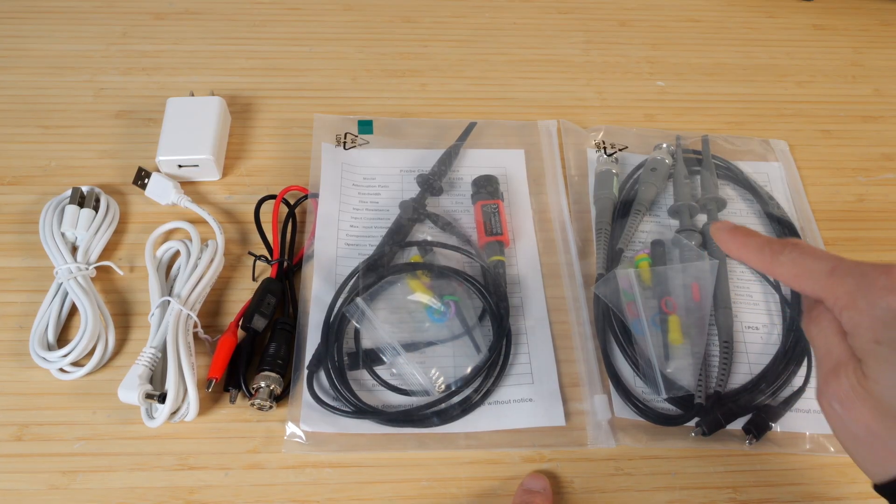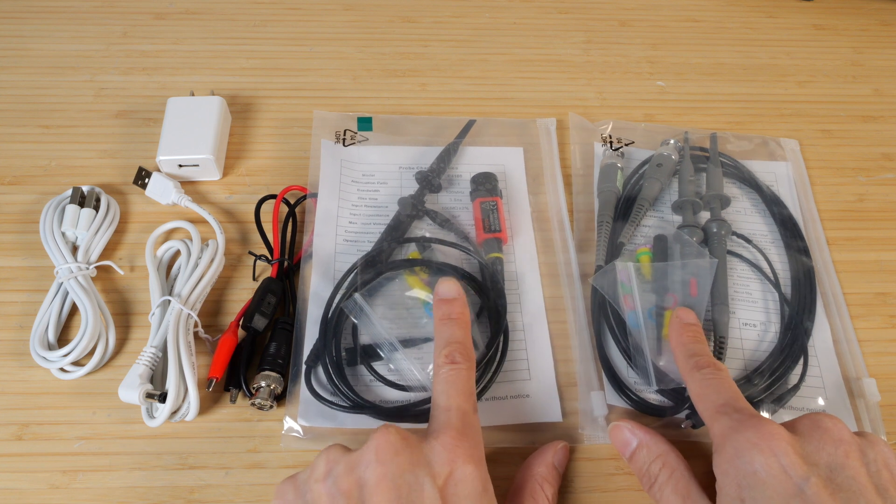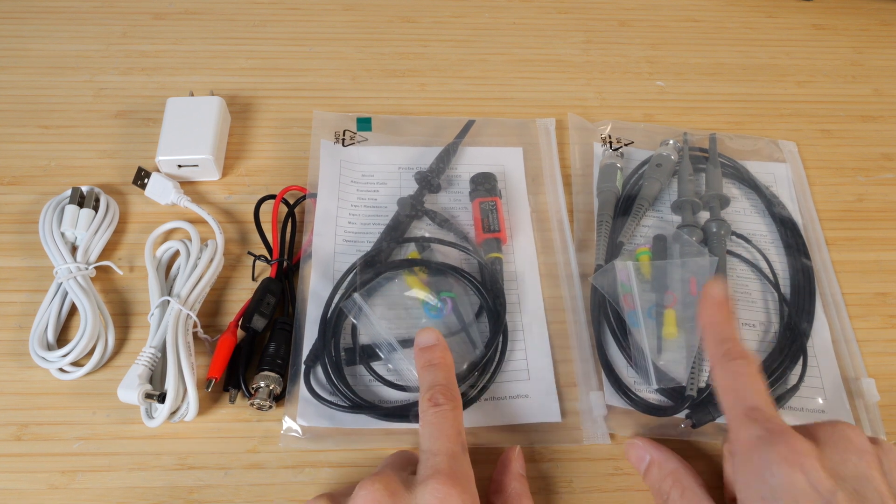Typically, oscilloscopes comes with one probe per channel that you're buying. However, this one comes with three of them. This is a two-channel oscilloscope.